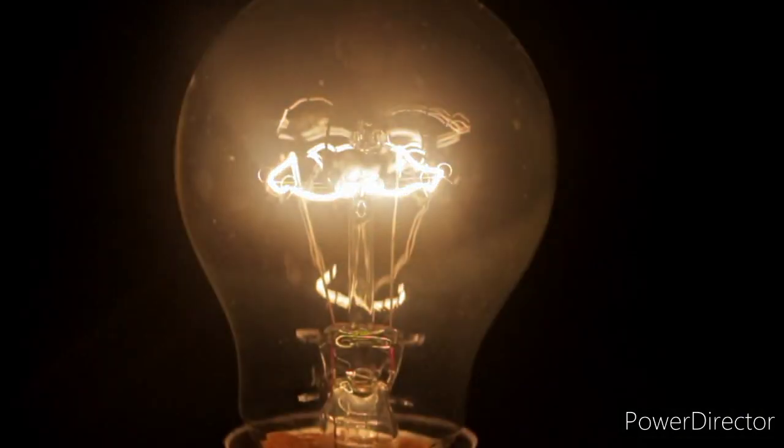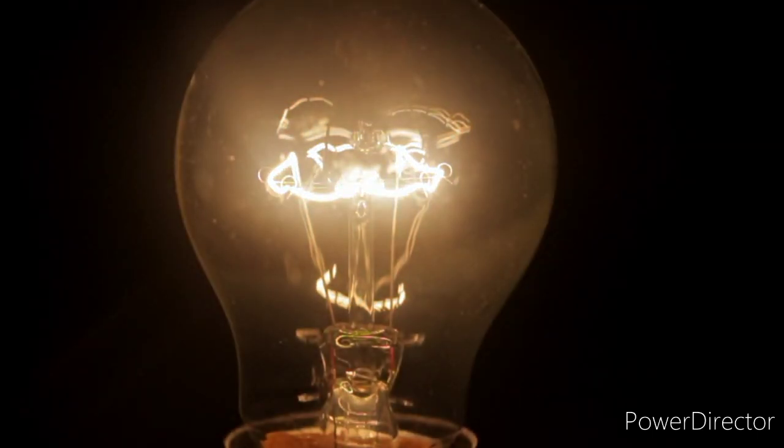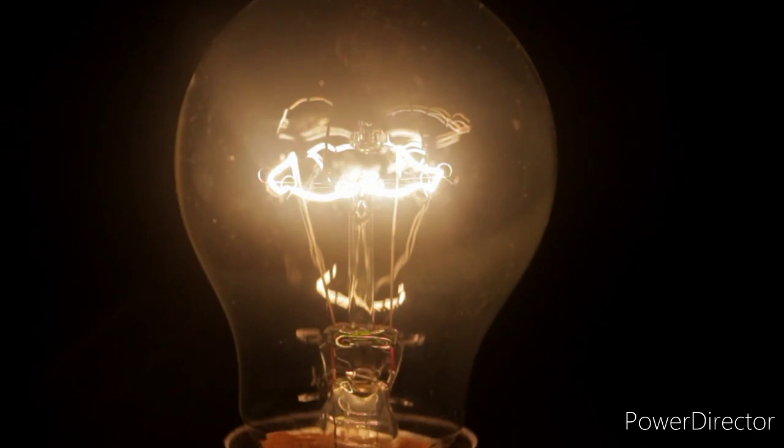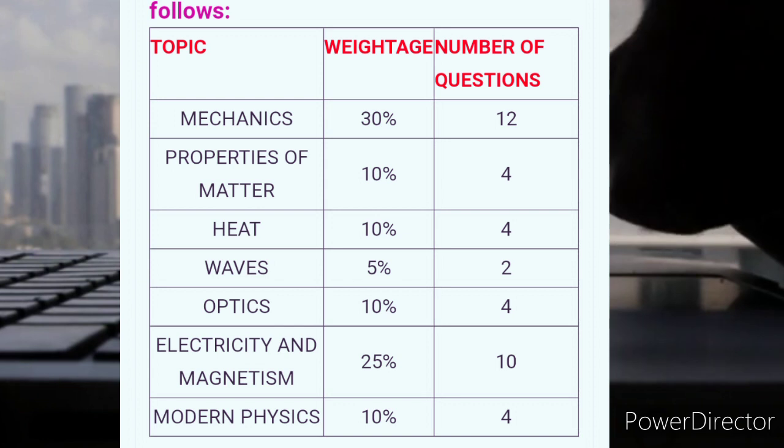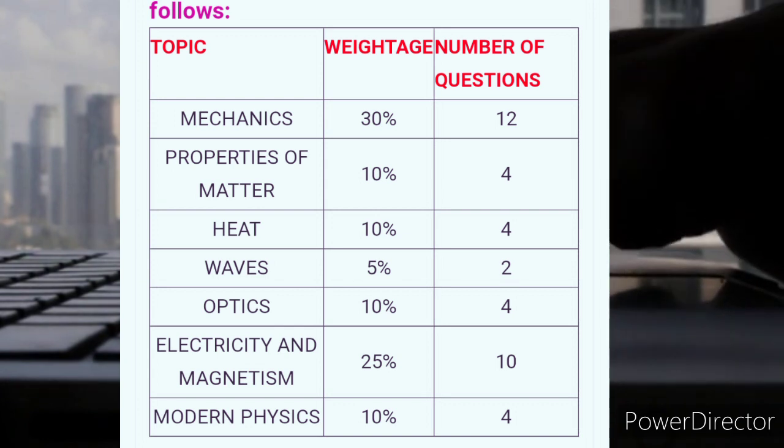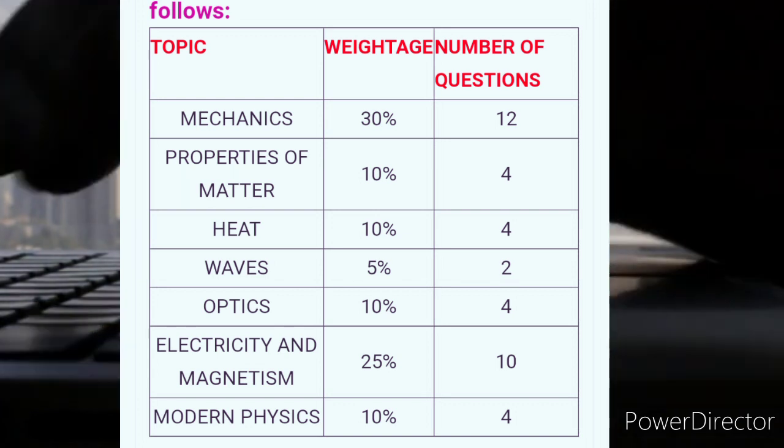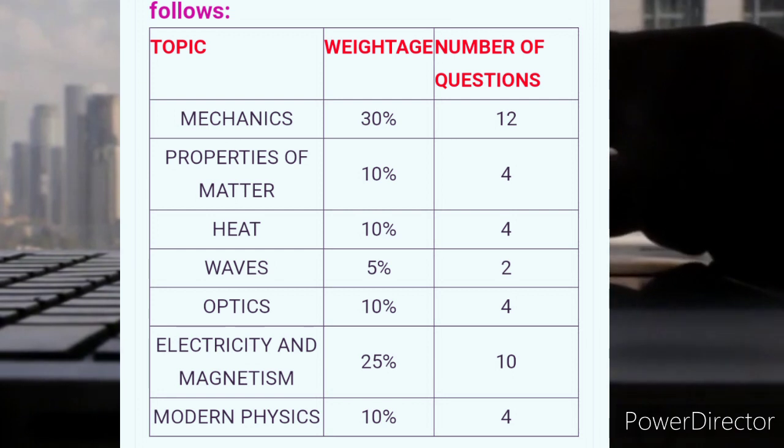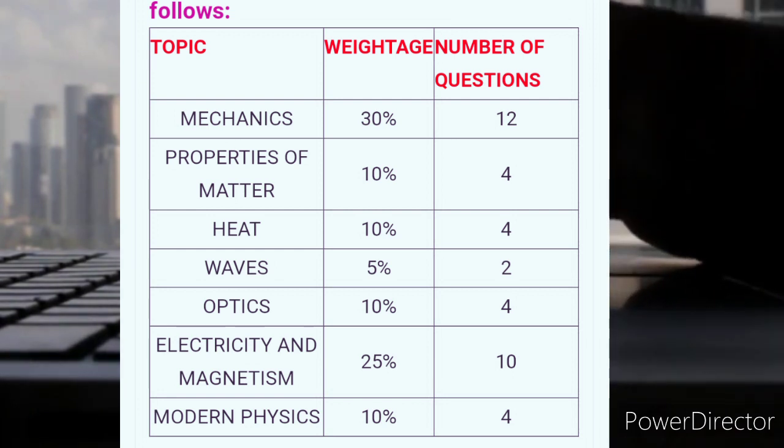First we see about topic and weightage and number of questions from each topic. Mechanics: 12 questions. Properties of matter: 4 questions. Heat: 4. Waves: 2. Optics: 4 questions. Electricity and magnetism: 10 questions. Modern physics: 4 questions. These are the approximate number of questions given in MZ physics examination.